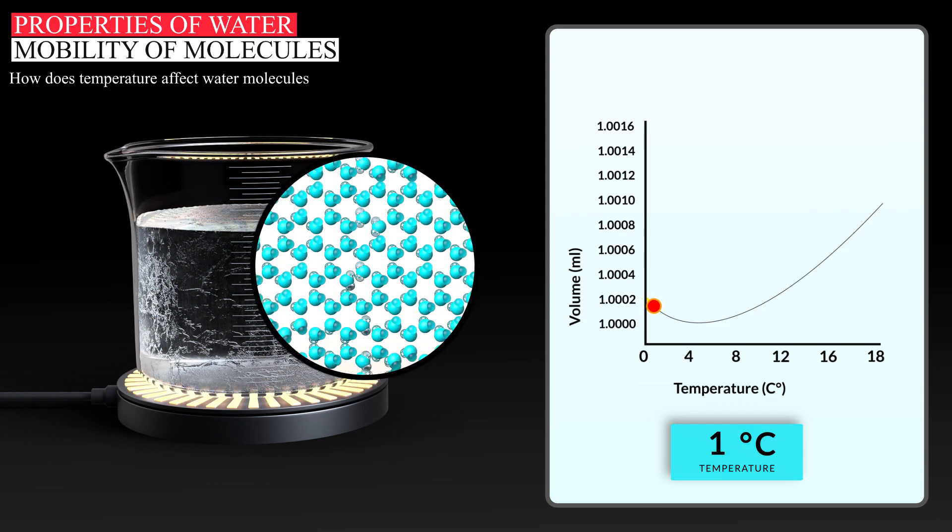When ice is heated from 0 to 4 degrees Celsius, it begins to thaw. However, because melting is not an immediate process,